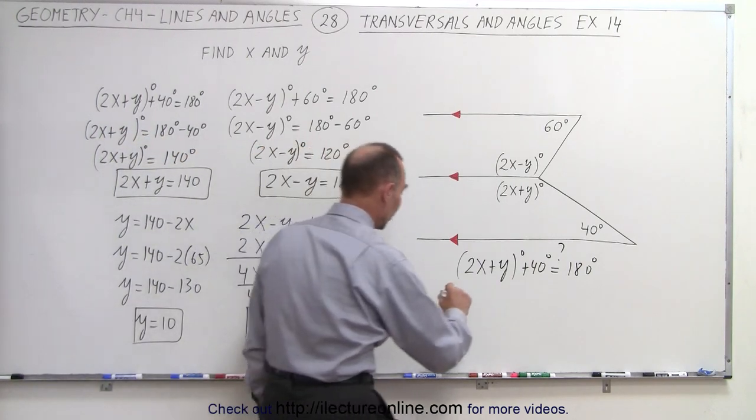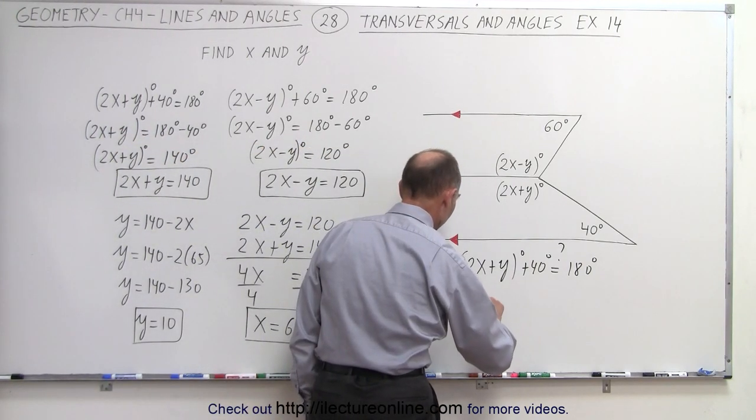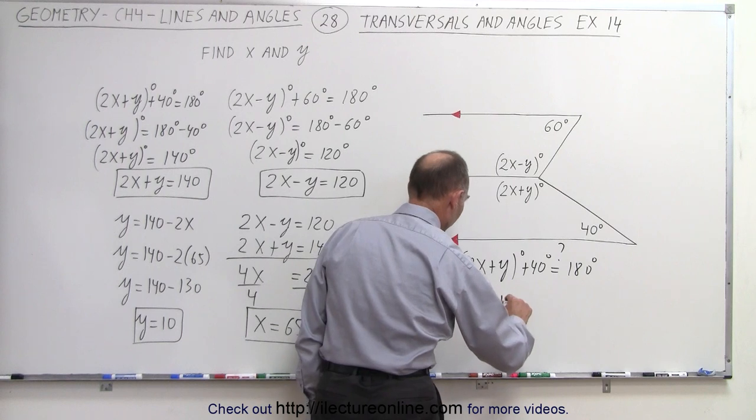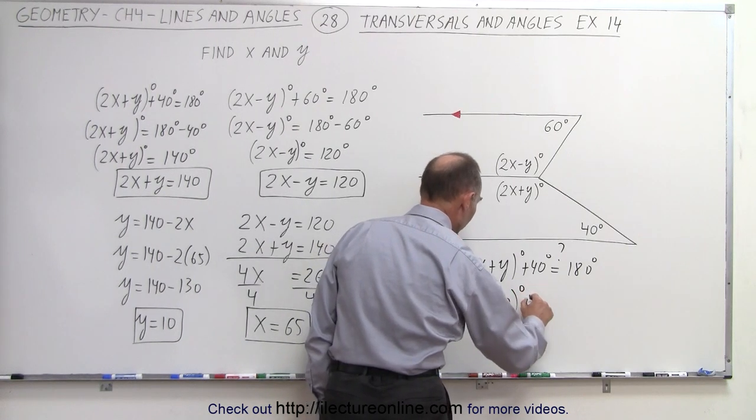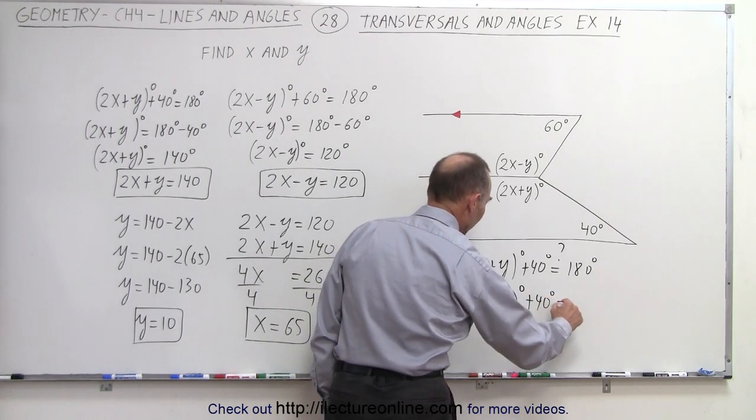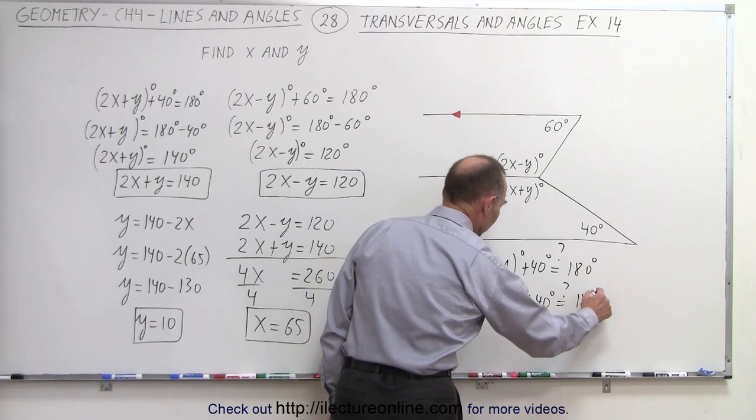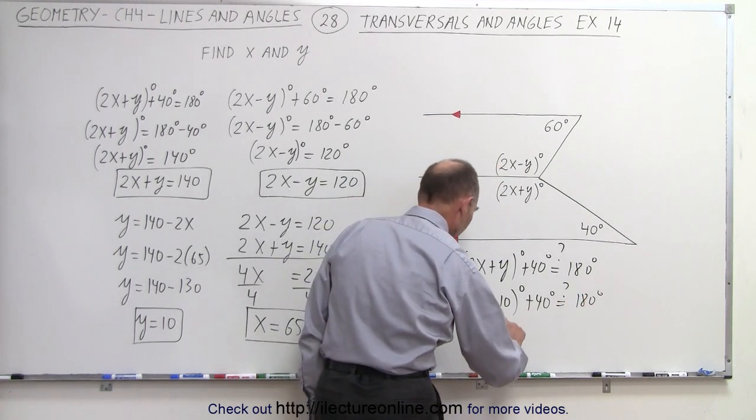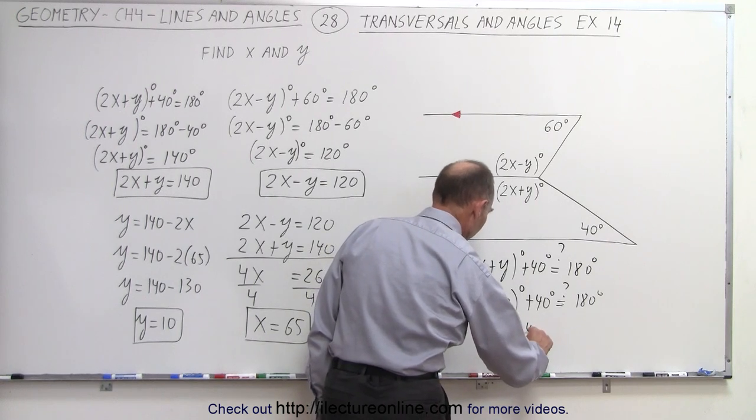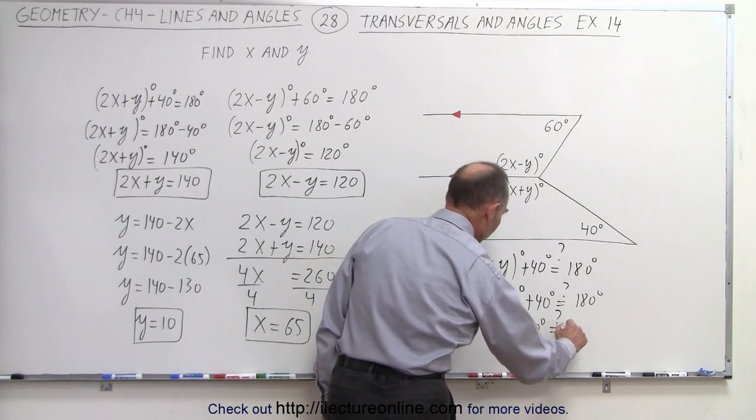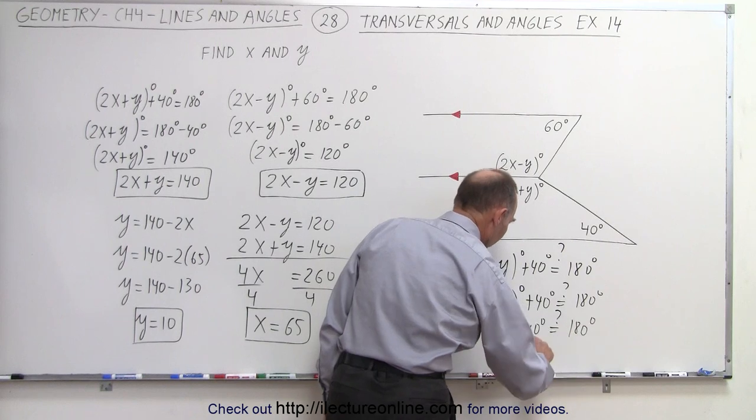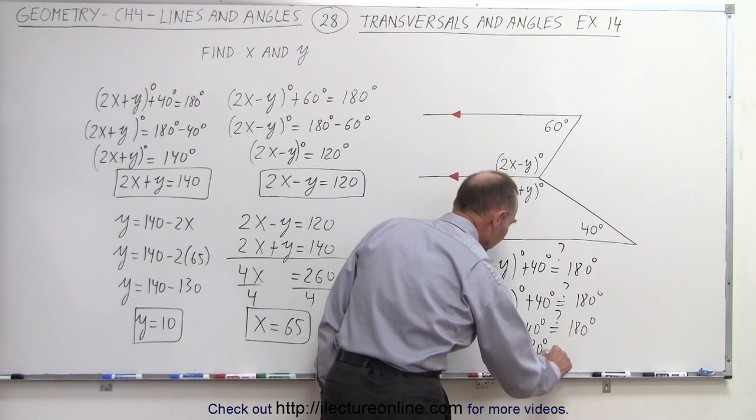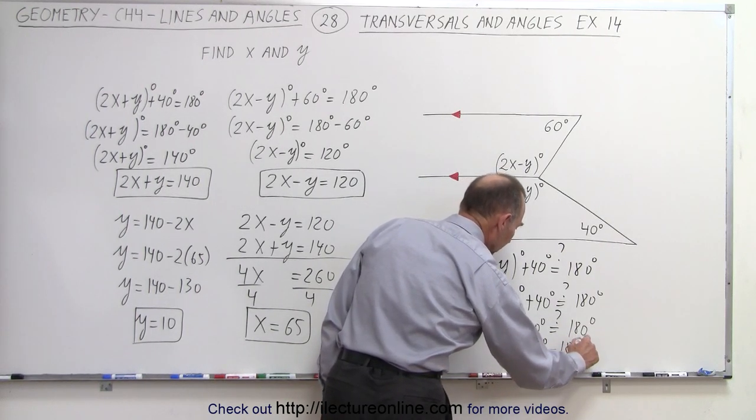So let's go ahead and do that. So here we have 2 times 65 plus 10 degrees plus 40 degrees is that indeed equal to 180 degrees. 2 times 65 is 130 plus 10 is 140. So 140 degrees plus 40 degrees is that indeed equal to 180 degrees. And sure enough, 180 degrees equals 180 degrees.